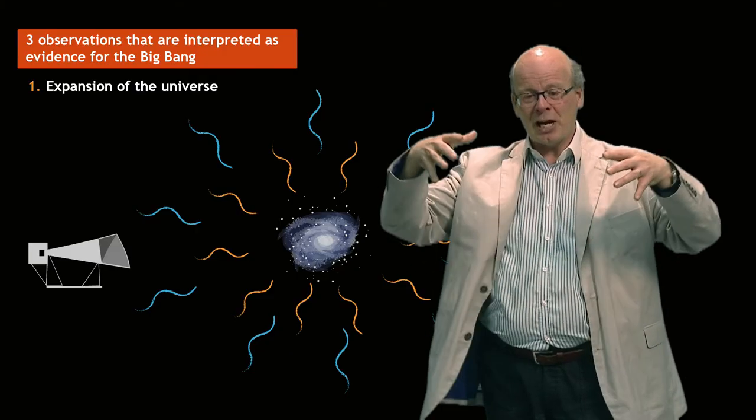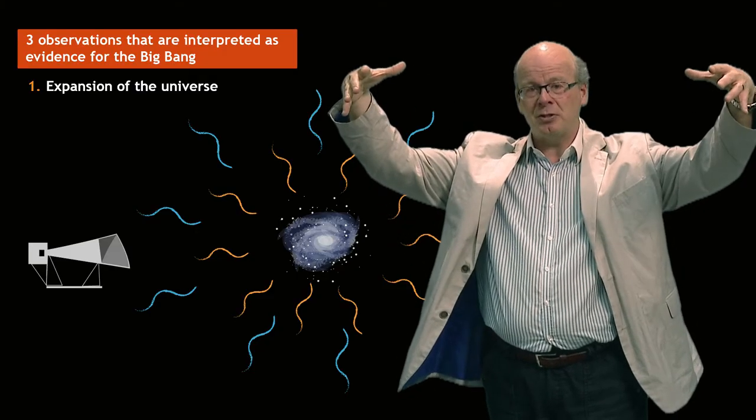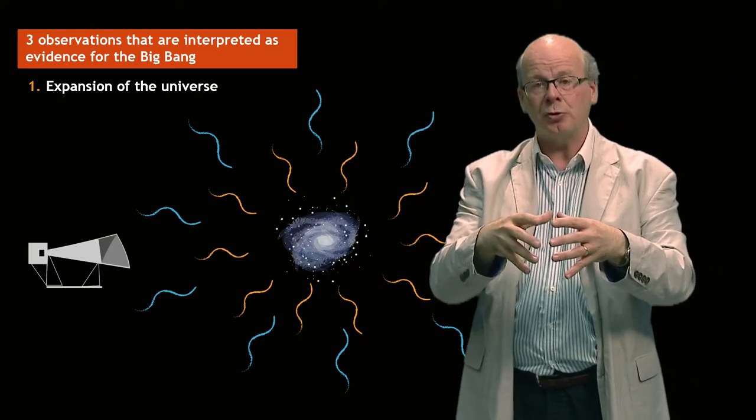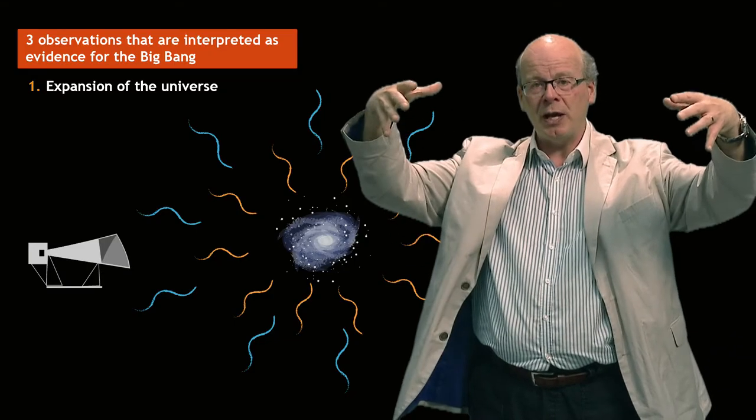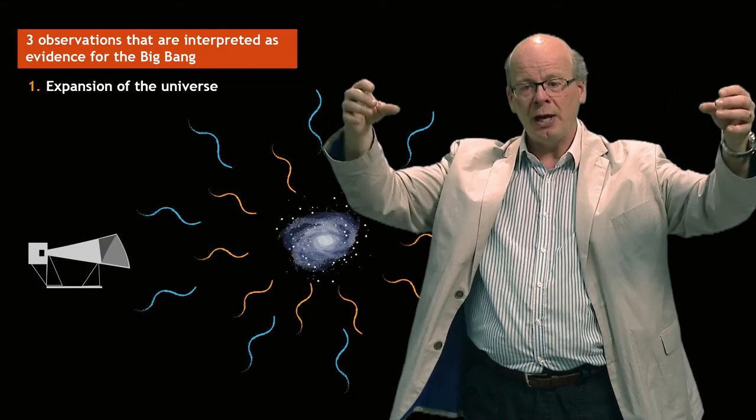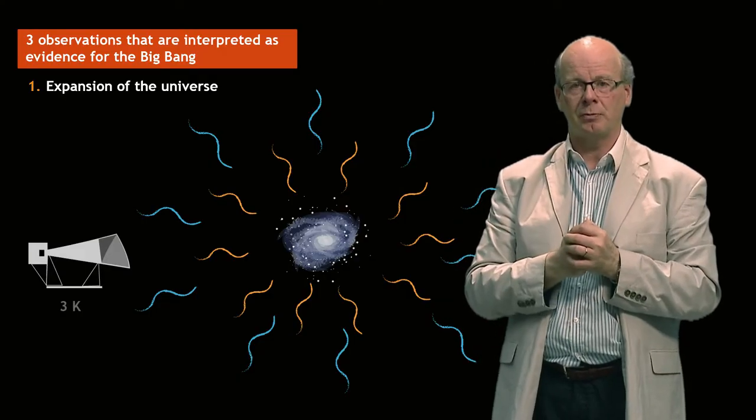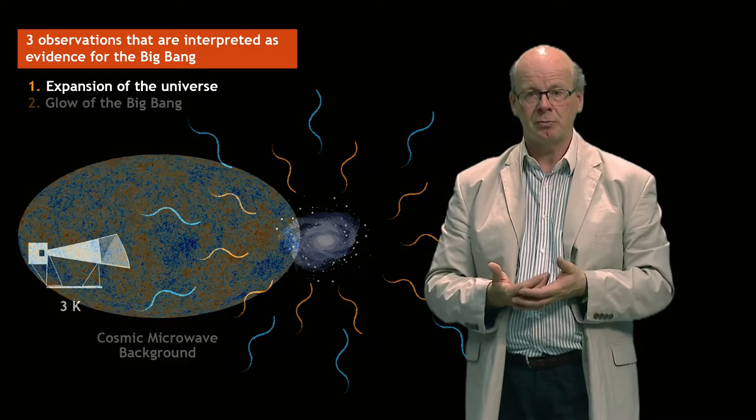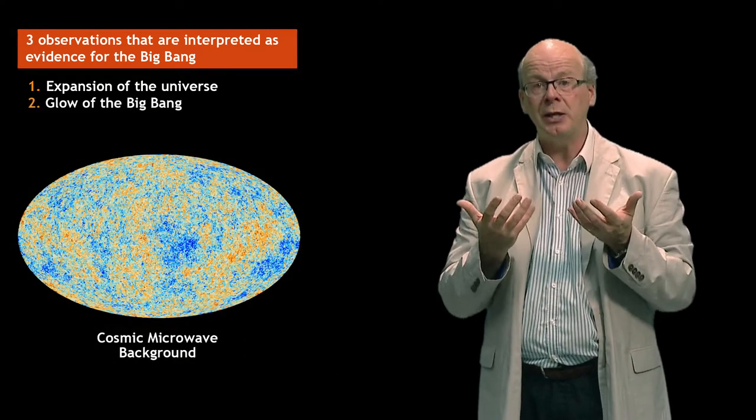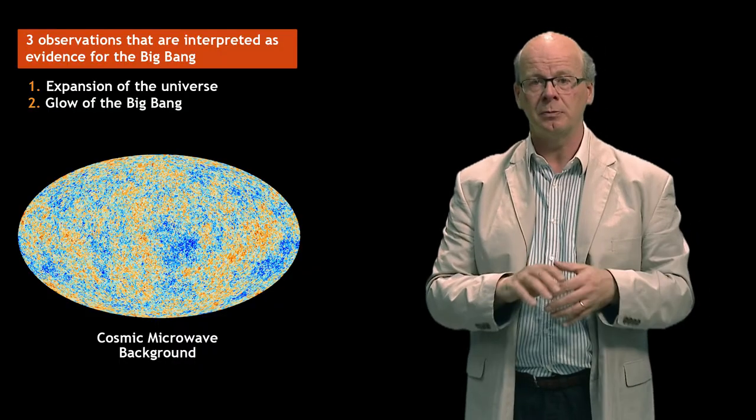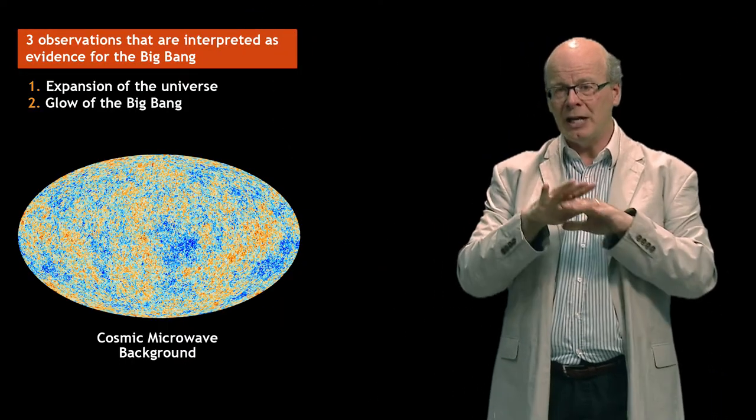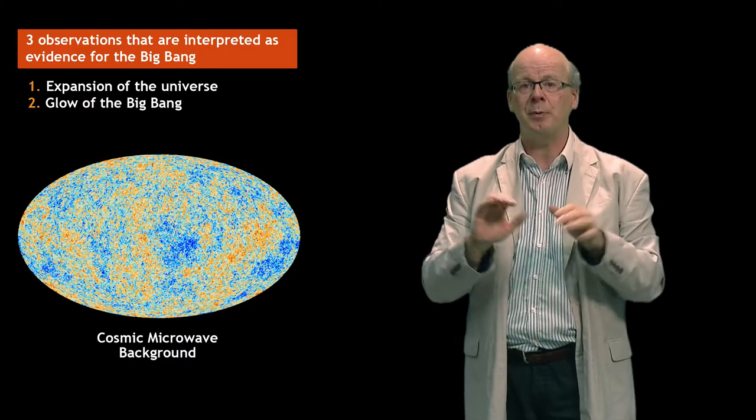And so the universe has become a thousand times bigger since then. So where it was three thousand degrees when it became neutral, it is now a thousand times bigger and a thousand times cooler and it's only three degrees above absolute zero. And at that temperature it glows in microwaves. And those microwaves we can capture with radio telescopes. And we see them coming from all around us. The entire sky is glowing in microwaves. And it's very uniform. It's the same temperature everywhere.